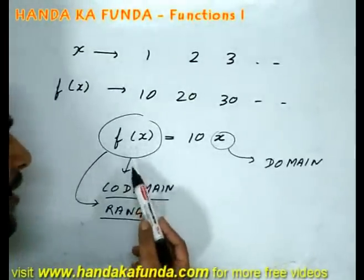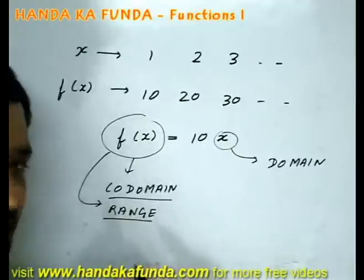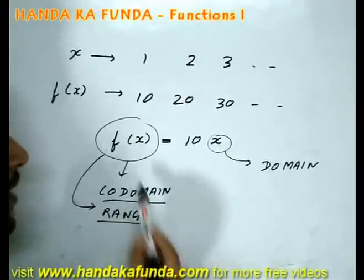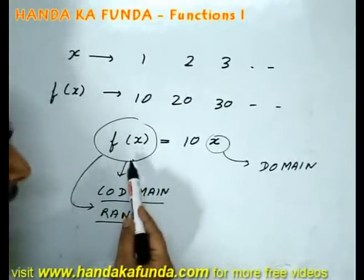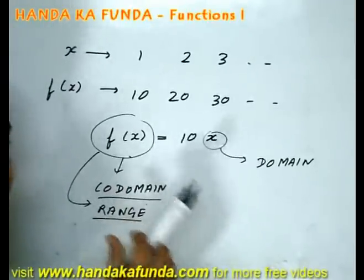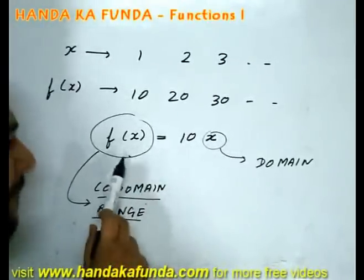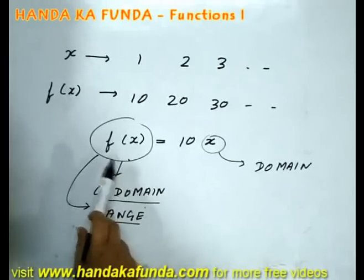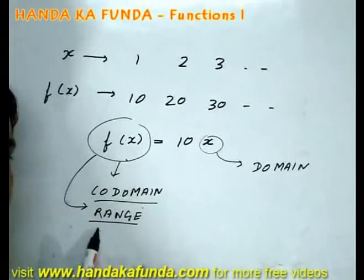Please be very careful about the difference between the co-domain and the range. Whatever values the dependent variable can or may take are known as the co-domain, but the precise set of values that f, which is the dependent variable, will take is known as the range.